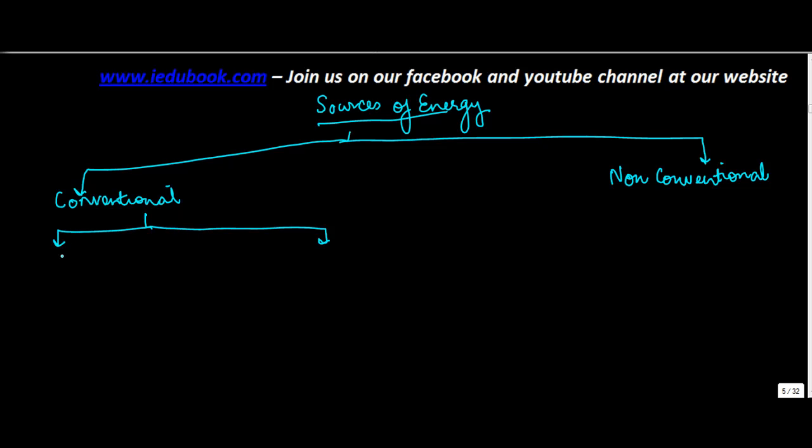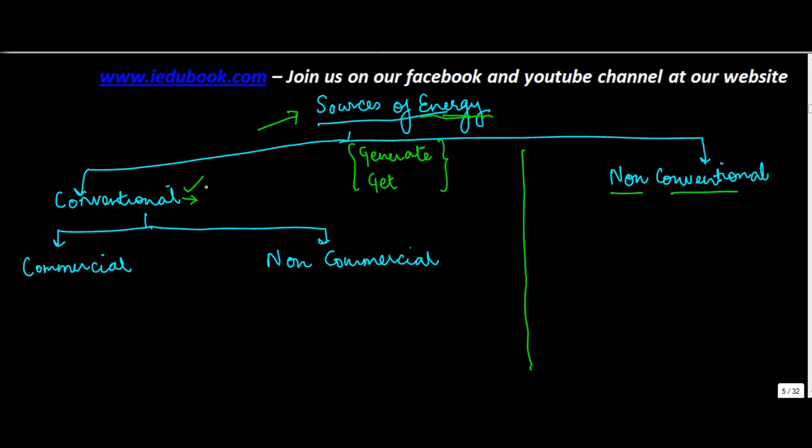These conventional sources are further divided into two categories: one is commercial and the second is non-commercial sources. What do you mean by sources of energy? Sources of energy basically mean how do you generate energy, how do you get energy. Just like you have a river which is a source of water, there are sources of energy also which are provided by nature, some of them being conventional, some of them being non-conventional which are coming lately into picture. Conventional sources of energy means the sources which have been in existence for centuries and decades, a long period of time.